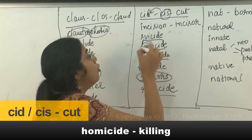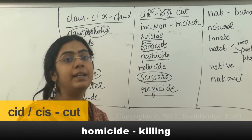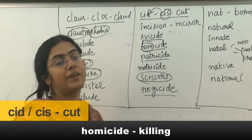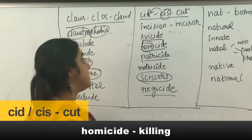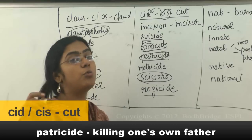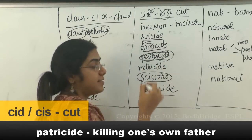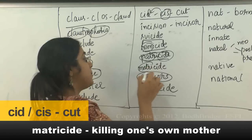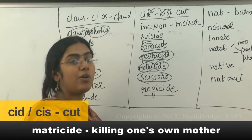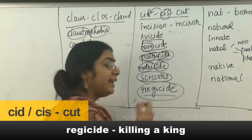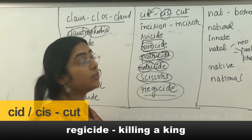Homicide: 'homie' comes from Homo sapien, meaning another man — one of our own race. If you kill someone else, that is homicide. Patricide is killing one's own father — 'patri' means father, 'cide' means killing. Matricide: 'matri' is mother, so matricide is killing one's own mother. Regicide is killing the king — the ruler.